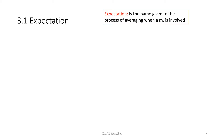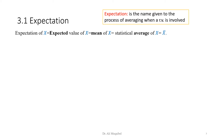Expectation is the name given to the process of finding the average when a random variable is involved. In general we say 'averaging' or 'finding the average value,' but when dealing with random variables we call it expectation — the expected value of x, the mean of x, or the statistical average of x. We also refer to that as x-bar. All these things refer to the same thing: the expected value or mean of x.